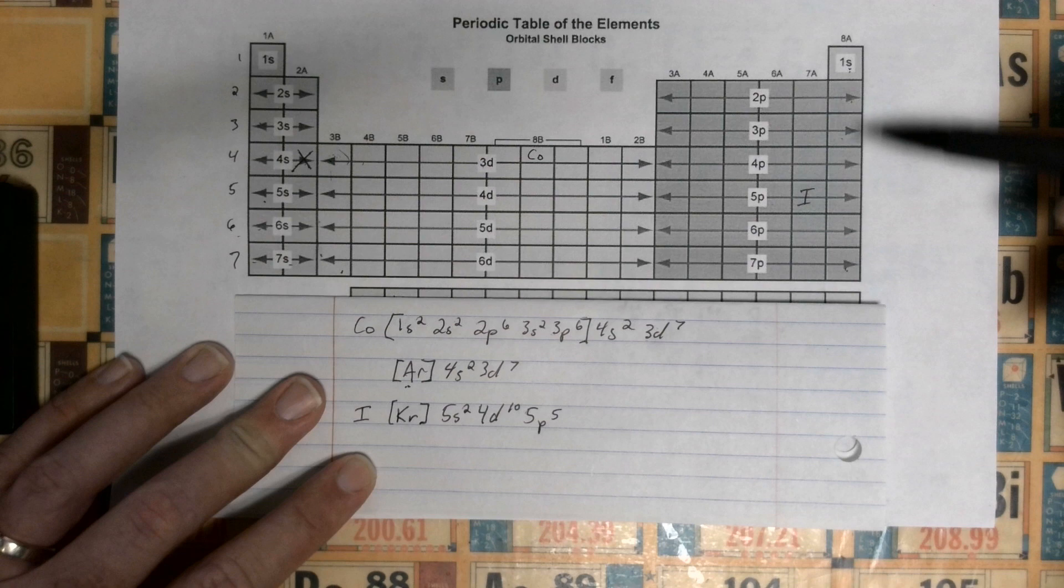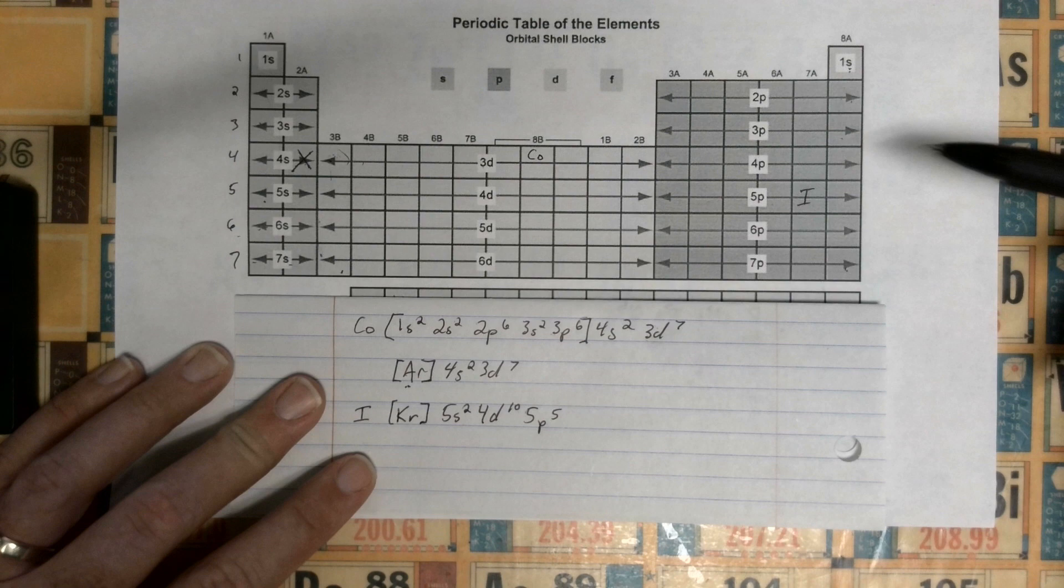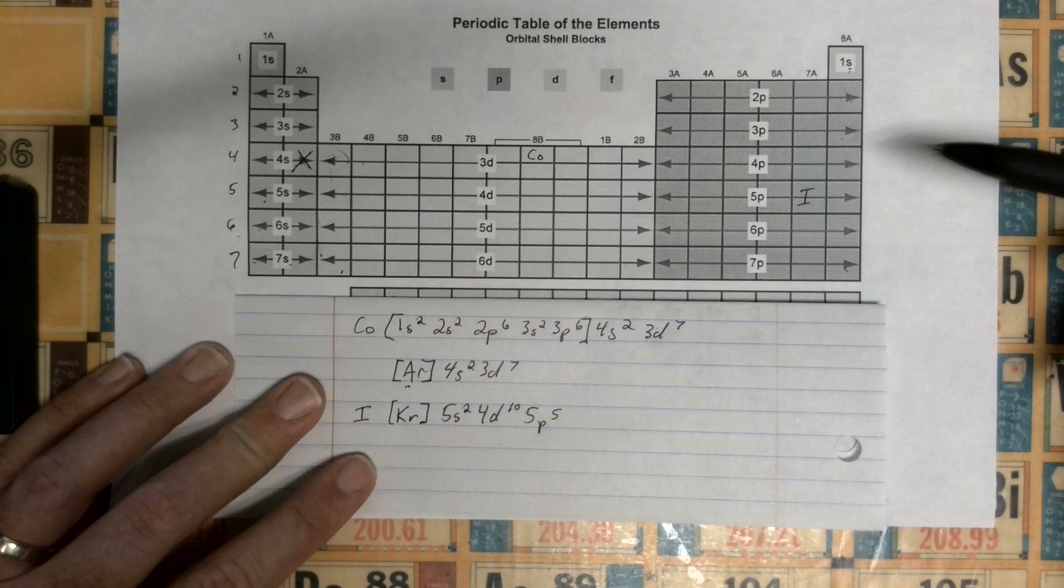So you always start back at the previous noble gas and then go from there. Now, if you're trying to do the abbreviated form for a noble gas, you would go back up to the previous one and then write out there. You can't just put the noble gas in brackets. I hope this helps, and let me know if you have any questions.